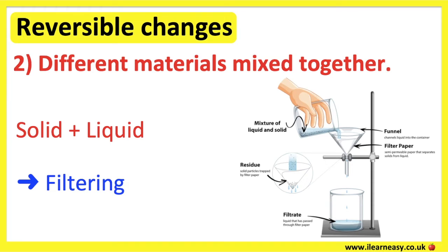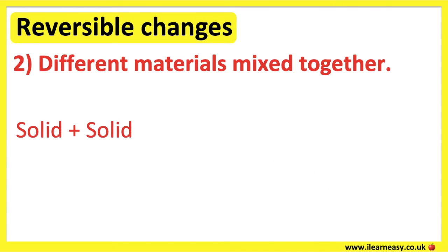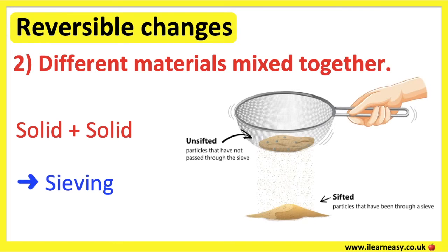Therefore, we can separate out the solid and the liquid. Sieving: when solids are mixed together, the process can be reversed by sieving. A sieve is a tool with a net attached that has holes. Sieves can come in different sizes. When the mixture is placed on the sieve, the smaller solids pass through, helping to separate out larger solids from smaller solids.